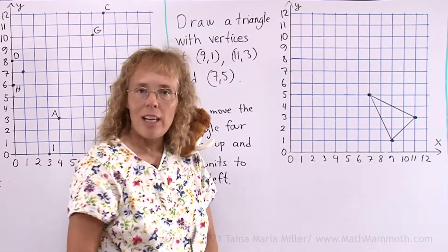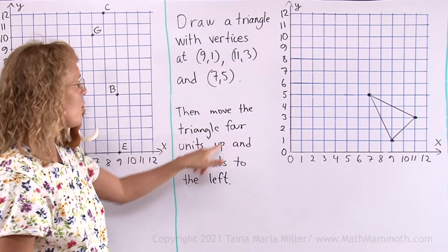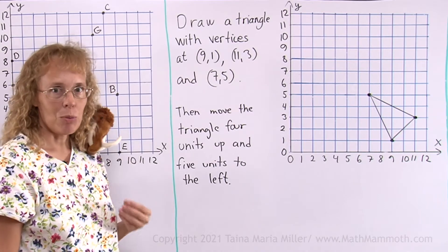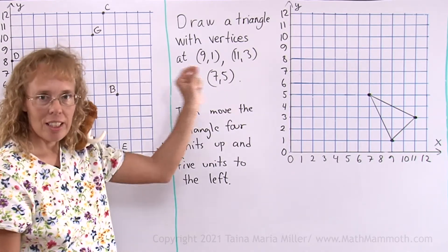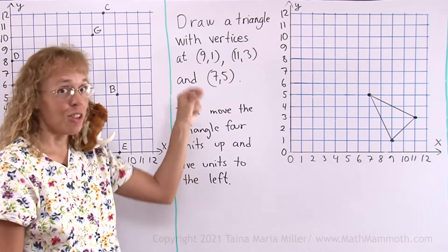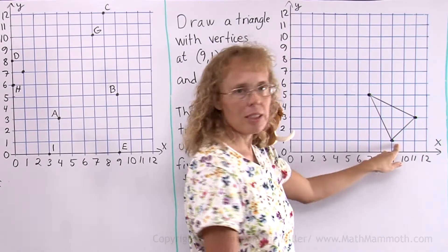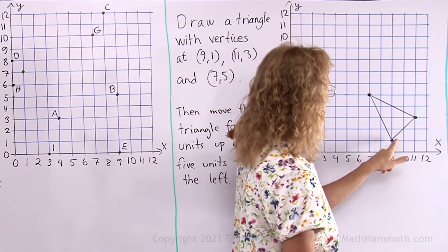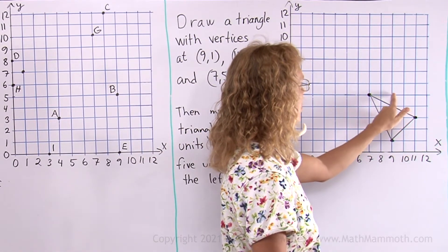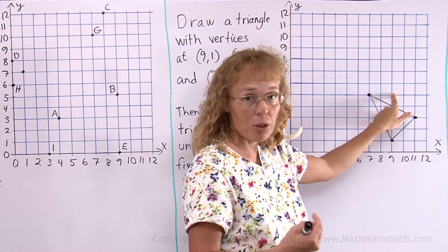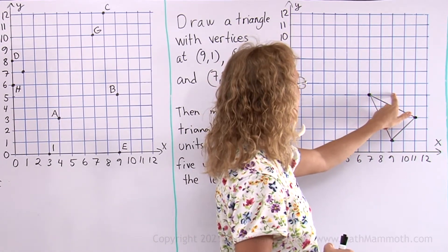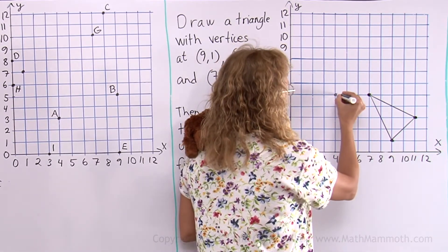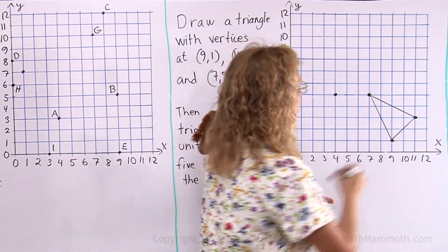Now we're going to move the triangle in the coordinate grid according to this: 4 units up and 5 units to the left. What I will actually do is I will move each vertex that much and get three new vertices, and then connect those. This one is the first point. It needs to move 4 units up and 5 to the left. So I'll just count here: 1, 2, 3, 4. This would be the point if it moved 4 units up. But then I also move it 5 units to the left: 1, 2, 3, 4, 5. Right there.